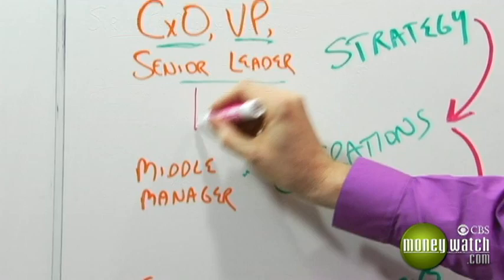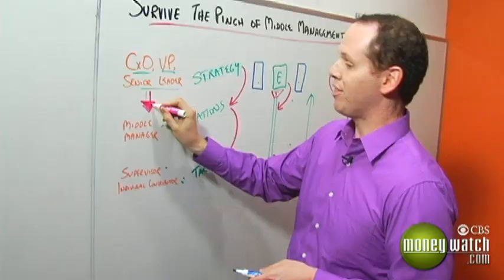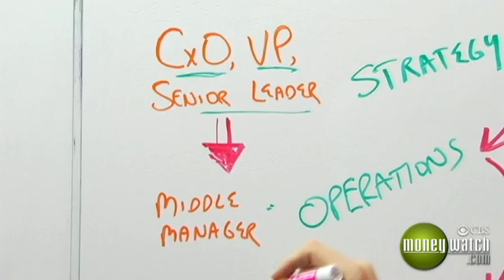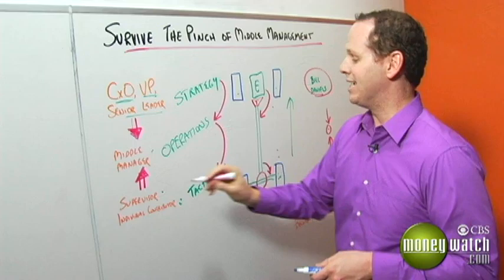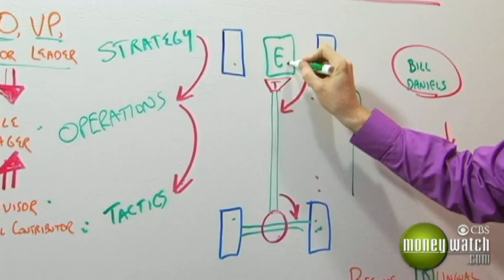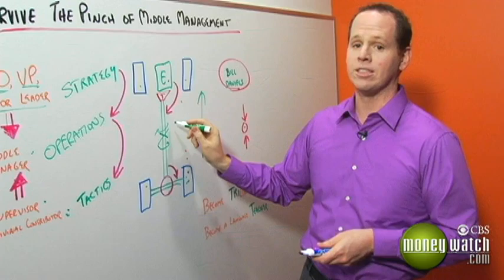This is why as a middle manager, you're stuck in the middle. The pressure from above you, from the senior leaders, is about strategy, getting things done at a strategic level. The pressure up from the bottom is tactical pressure, why things aren't working. It's as if, in the language of the car, you have the engine trying to move the car, you have the wheels stuck, and you're right here in the center, pinched, getting twisted in two different directions.